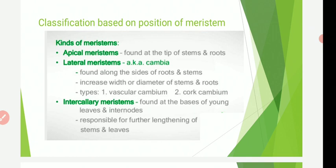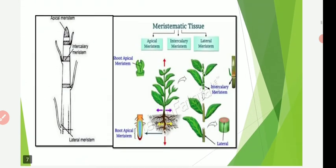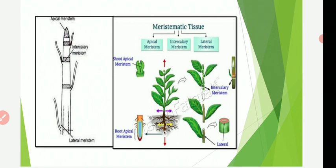The growing point formed of a single dividing cell is called an apical cell, for example in pteridophytes. In higher plants, a number of dividing cells called initials are present; they increase the height and length of the organ and the primary body. At the apex of the root there is presence of apical meristem. The second type is intercalary meristem — it is a portion of apical meristem located between the permanent tissue, and gets separated from apical meristem during development. It occurs at the base of internodes and leaves.